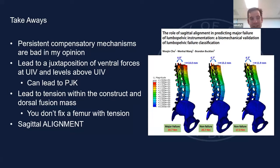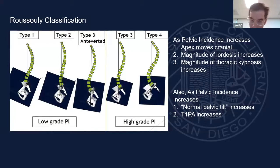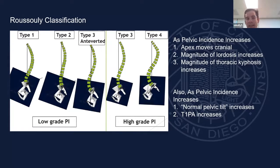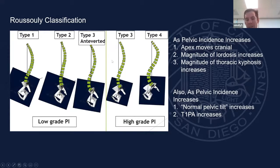We want to focus on sagittal alignment and coronal balance — these are totally different. One important way of thinking about sagittal plane alignment is the Roussely classification. There are now five types describing the shape of the spine. A type one is a long sweeping thoracic kyphosis with the inflection point around L4-L5, very little upper lumbar lordosis, and all lordosis concentrated low. These tend to be the lowest pelvic incidence patients. Frank Schwab will note it's a spectrum, not five discrete types — this framework just helps you conceptualize what's happening.